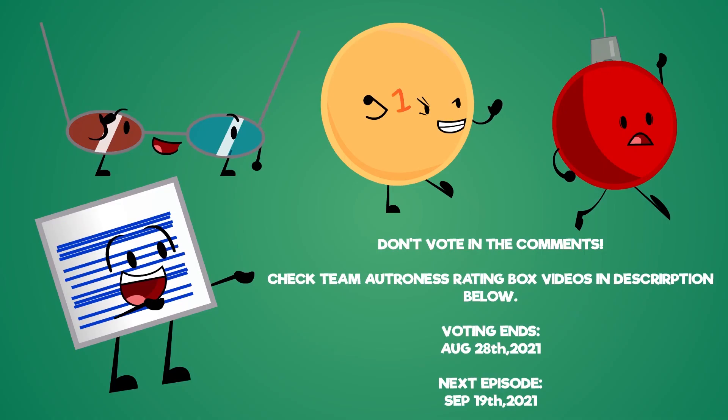Time for the voting period! So vote for Note, Armut, Goldcoin, and Duty Glasses. And don't vote in the comments. Check Team Alternis rating box videos in the description below. Voting ends August 28th, 2021. Next episode will come out on September 19th, 2021. And this has been another episode of Object Trashed! Thanks for watching!